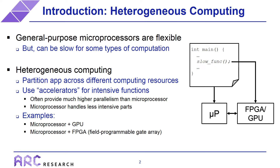The processor basically handles all of the less intensive parts of the application — control, initialization, things that aren't parallel. There are numerous examples of acceleration technologies and architectures. By far the most common form of acceleration is the combination of a microprocessor with a GPU. But what I'm going to be focusing on is microprocessors combined with FPGAs, or Field Programmable Gate Arrays, because that is the technology that is used on Intel's Platform Acceleration Card.